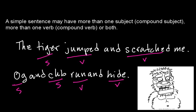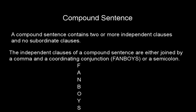Let's look at compound sentences and see how they differ. A compound sentence will contain two or more independent clauses, and just like a simple sentence, it will contain no subordinate clauses. You may as well think of it as two or more simple sentences combined together, and you can have multiple independent clauses joined together.